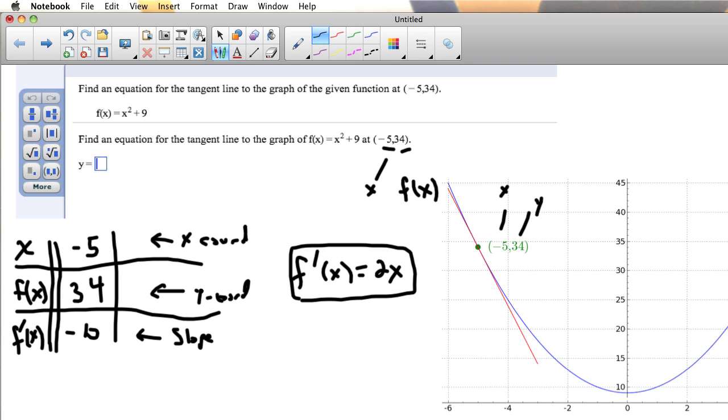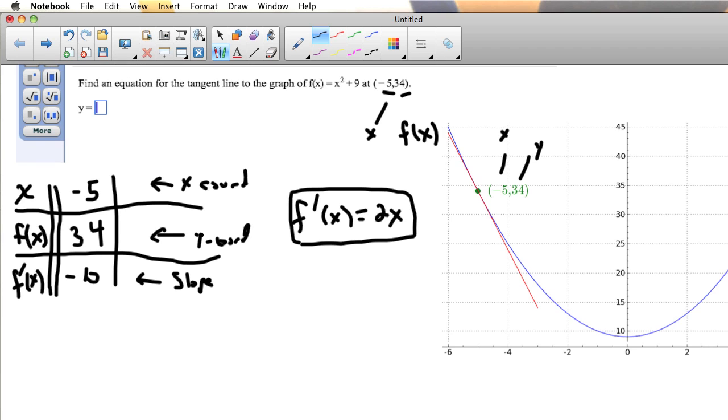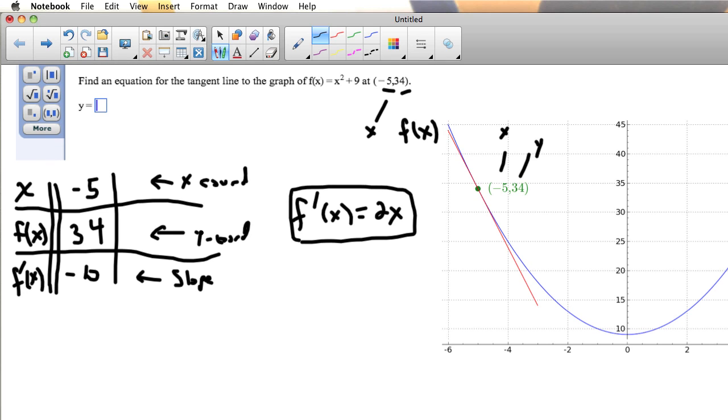To find the equation of the tangent line, the best thing to use is what we call point-slope form. This is the form where if you know a point on your line, which we do—the point negative 5, 34 is a point on my red line—and I know the slope of the red line, which I do, then I can immediately write down the equation. The point-slope form looks like this: y minus a y-coordinate that you know. The y-coordinate we know is 34. It's equal to the slope, which we know, times the quantity x minus an x-coordinate that we know. So x minus minus 5, which is really x plus 5. This is the equation of the tangent line, the equation of the red line.